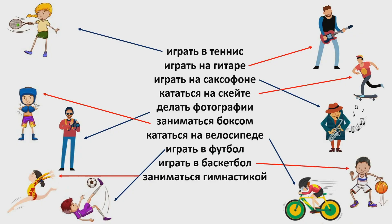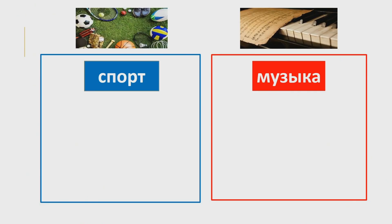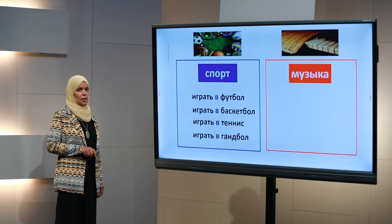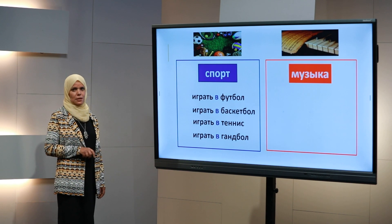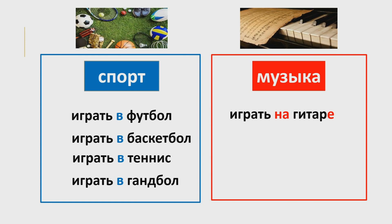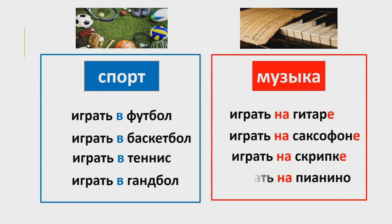Вот сейчас обратите внимание: когда мы говорим о спорте, надо сказать «играет в футбол» — играет во что? Играет в баскетбол, играет в теннис, играет в гандбол. А если речь идёт о музыкальном инструменте, тогда надо сказать: «я играю на гитаре», «играет на саксофоне», «играет на скрипке», «играет на пианино». Слово «пианино» никогда не изменяется.